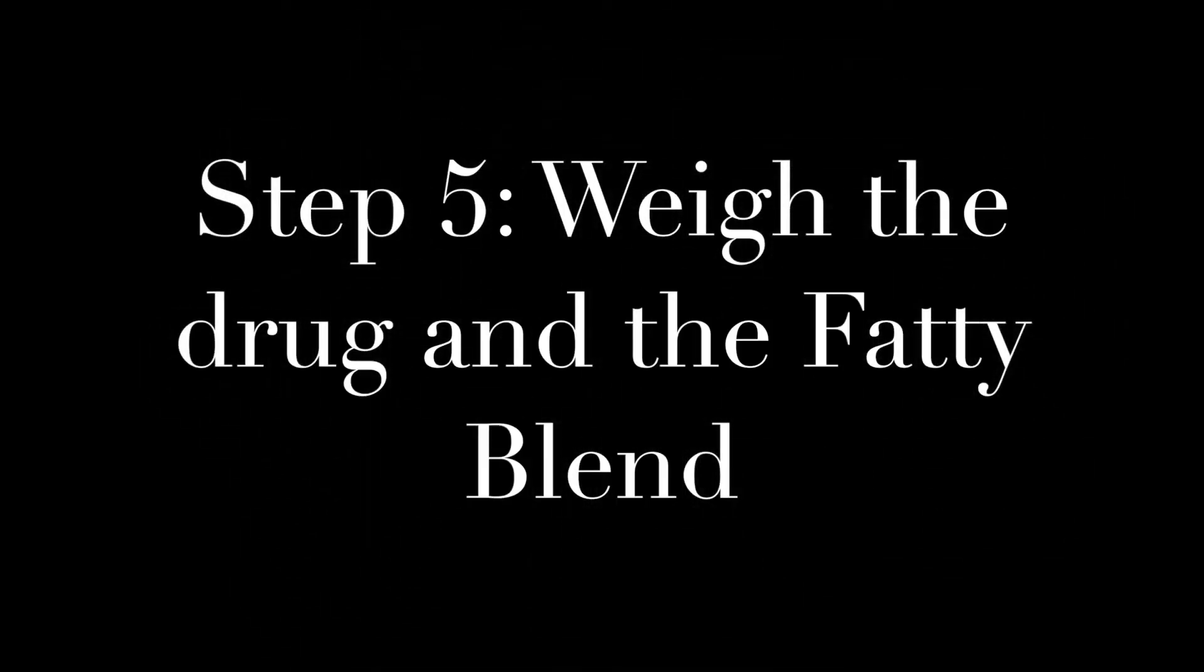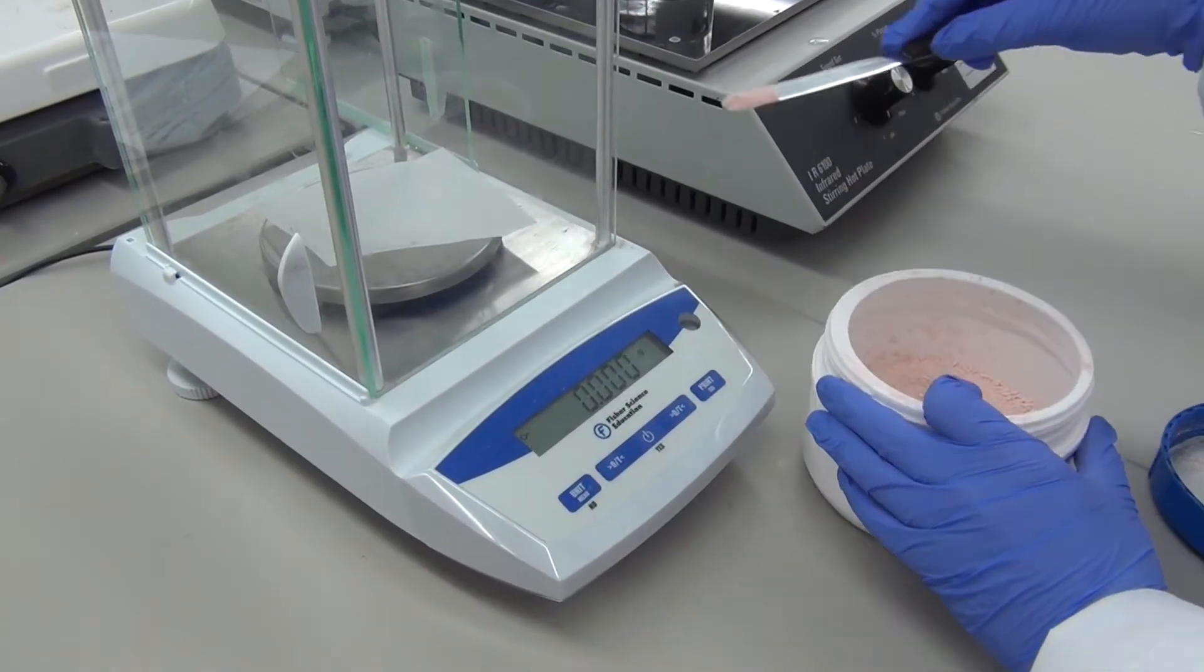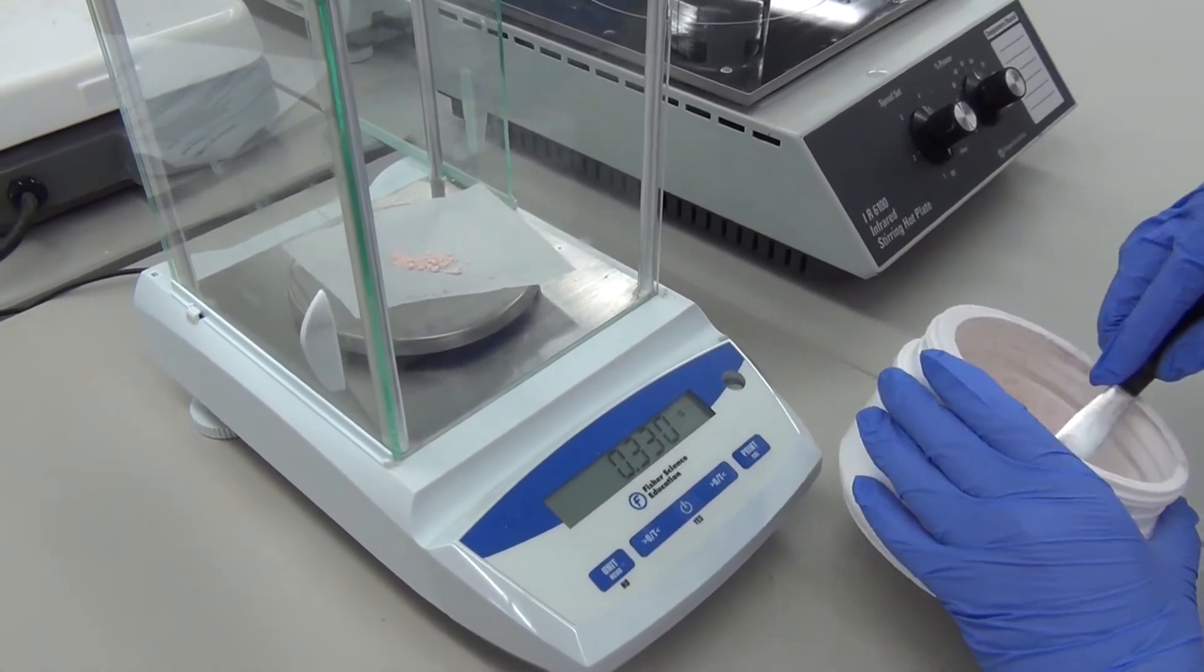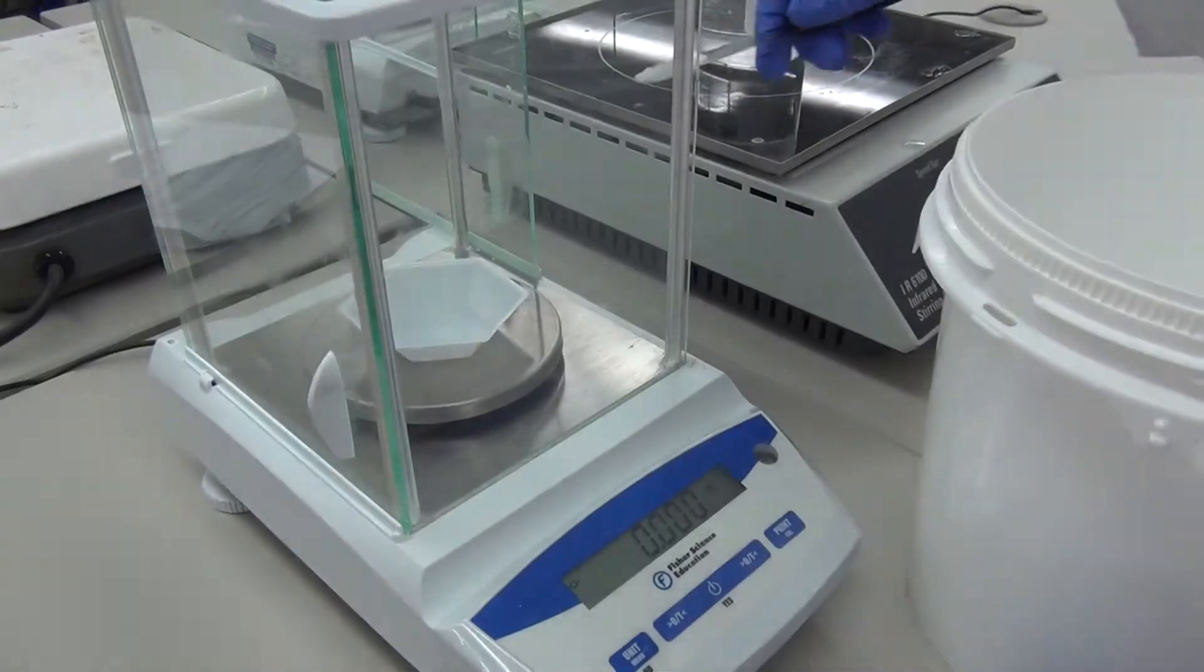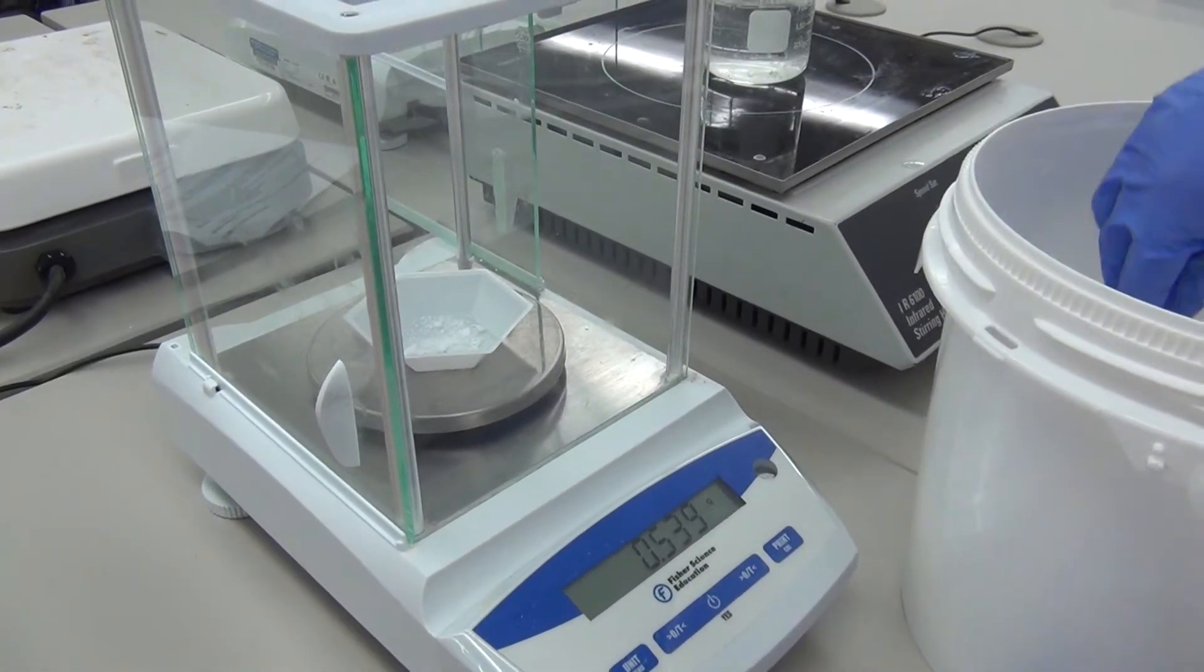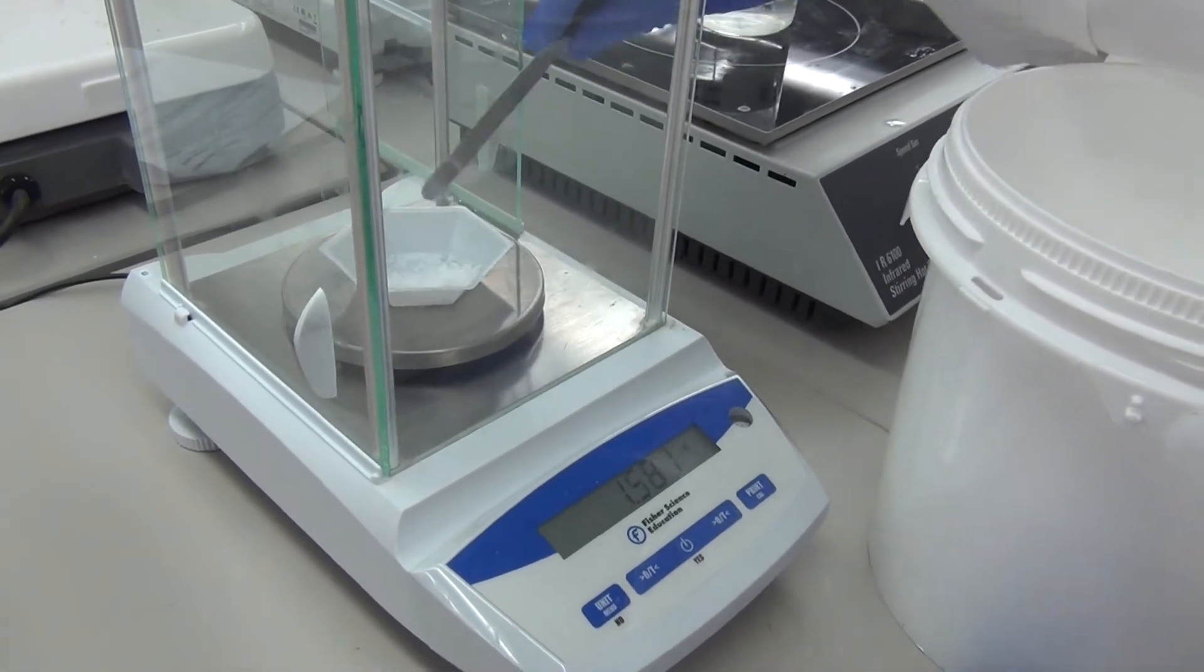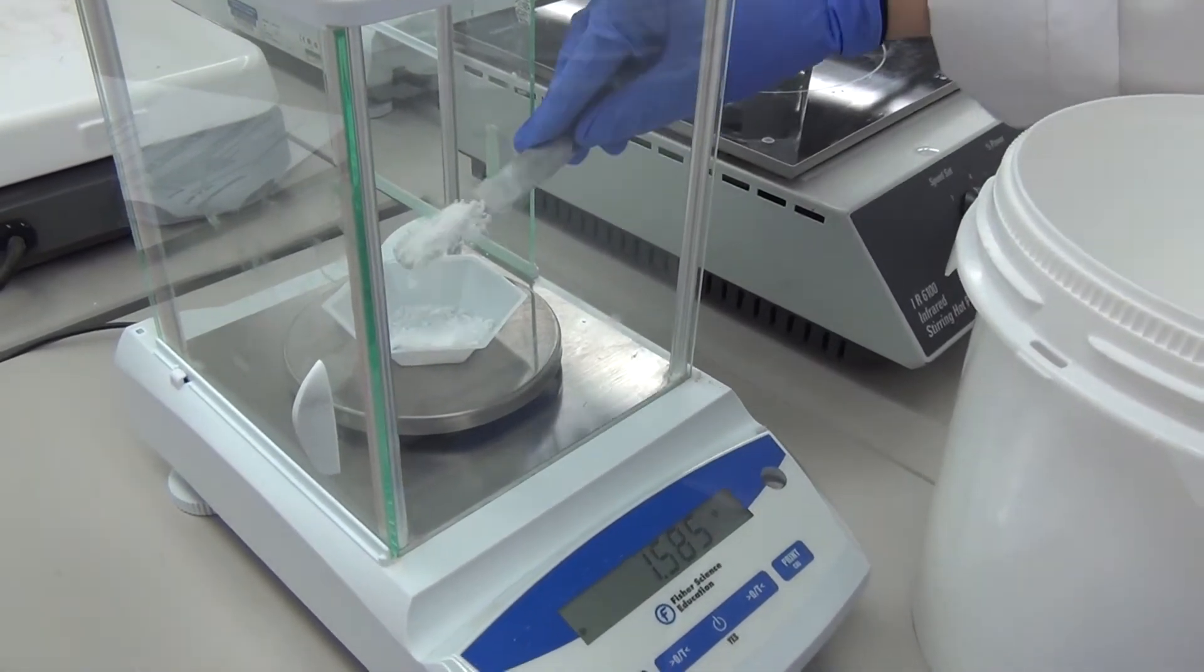For step five, you are going to weigh out the drug and the fatty blend. For this prep, we are using calamine powder as our drug. Next, you are going to weigh out the fatty blend. You are actually going to weigh out two separate aliquots of the fatty blend. The first aliquot will contain four grams. The second aliquot will contain eight grams.